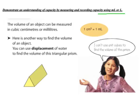So the volume of an object is usually measured in cubic centimeters, but can also be measured in milliliters because one cubic centimeter is equal to one milliliter. And this is why water displacement works.